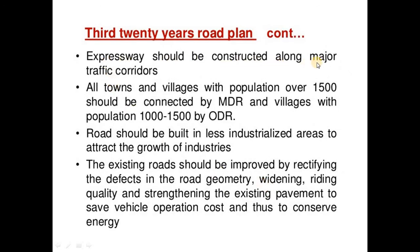Expressways should be constructed along major traffic corridors. All towns and villages with population over 1,500 should be connected by major district roads, and villages with population of 1,200 by other district roads. Roads should also be built in less industrialized areas to attract industrial growth.